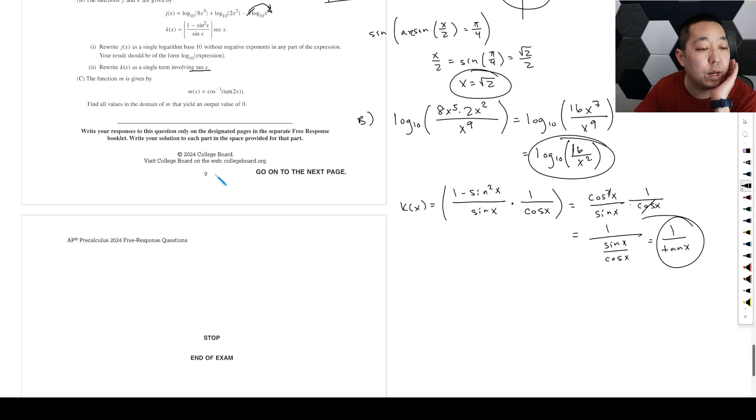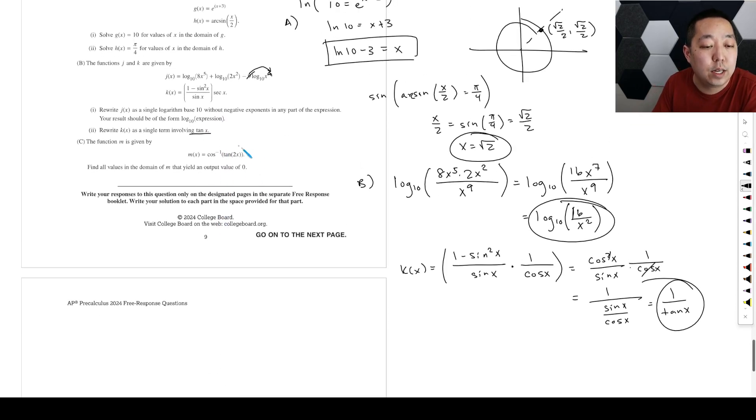The function m is given by this. Find all values in the domain that yield an output value of 0. So we want to know what values of x make this 0. So we want to know when cosine inverse of tan of 2x is equal to 0. Now cosine inverse always gives you one value because it's a function. So we need to think everything that we'll map. We've got to map everything in here.